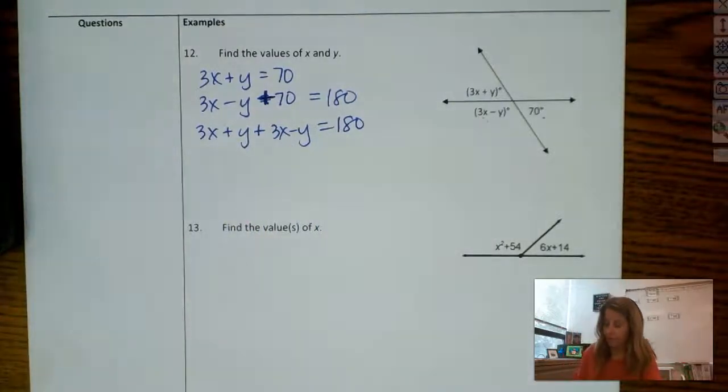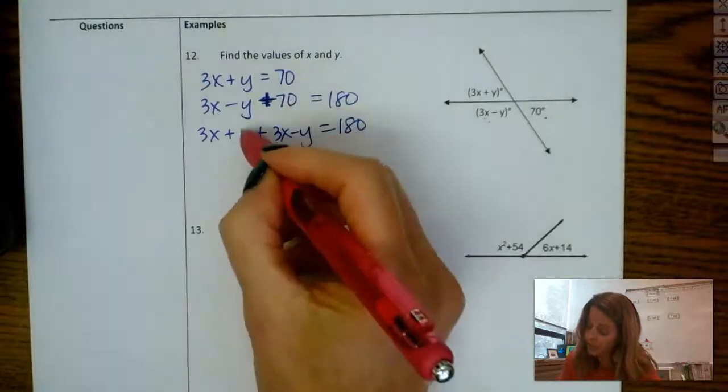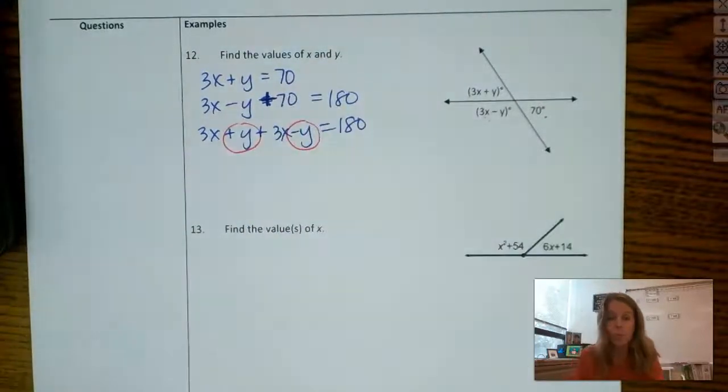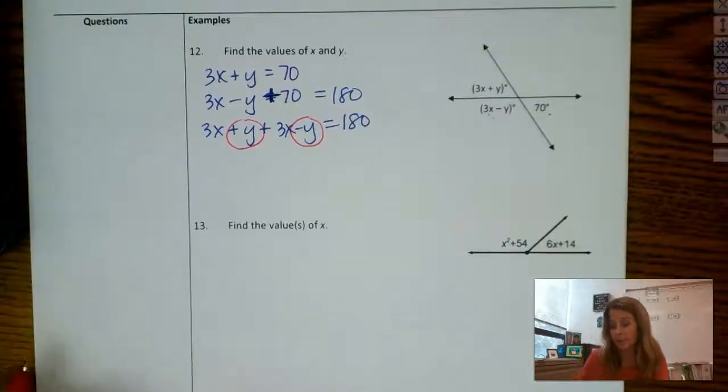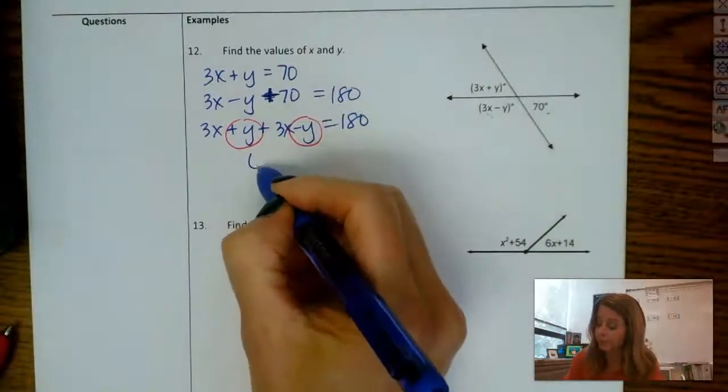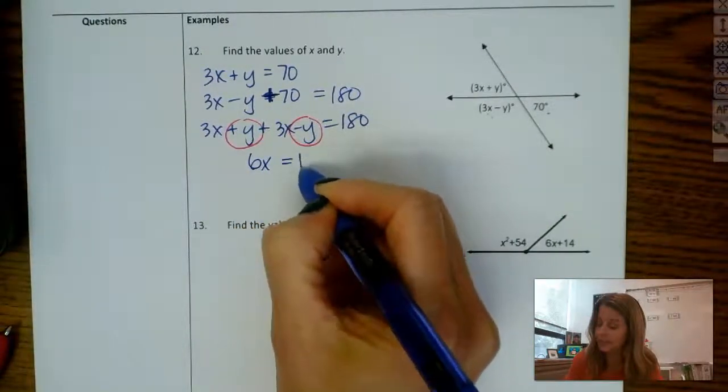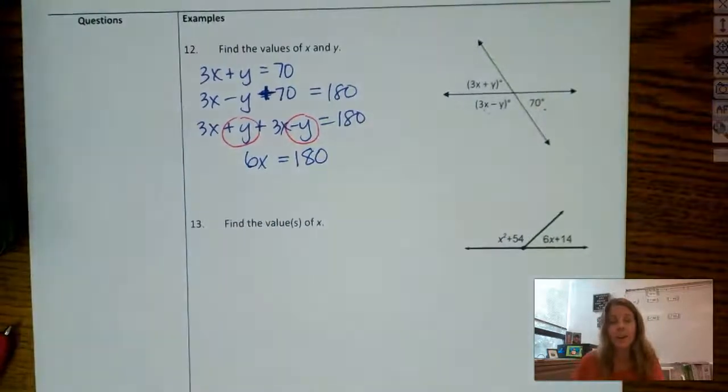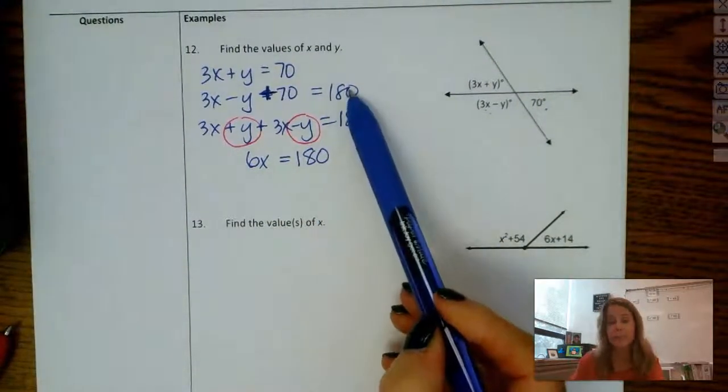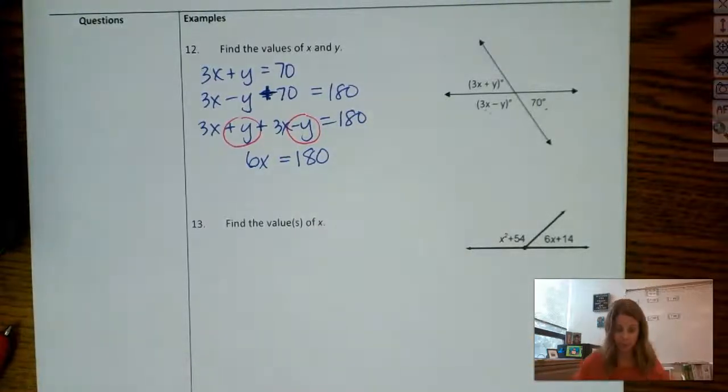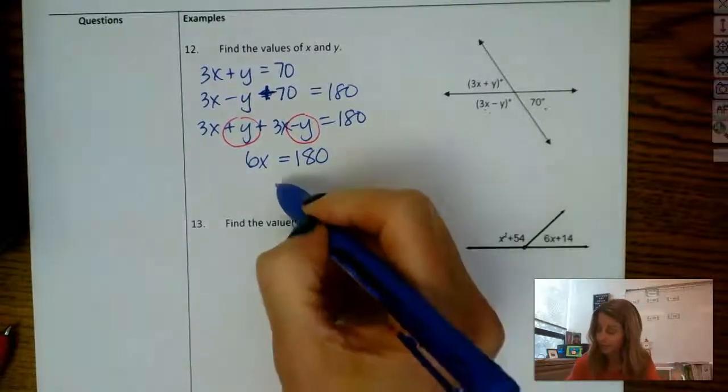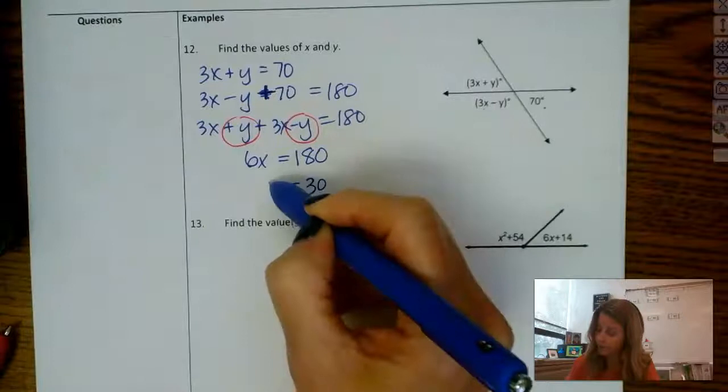One thing, though, if you look at this last equation, and look at the y's, they are going to cancel each other out. So that's good news, because now this equation would just have one variable. So this would just say 6x equals 180. Otherwise, I would have to do some sort of system, elimination, substitution to solve, which I could. But this makes it much quicker. So you want to divide that 6 into 180. And we get 30. So there's x.